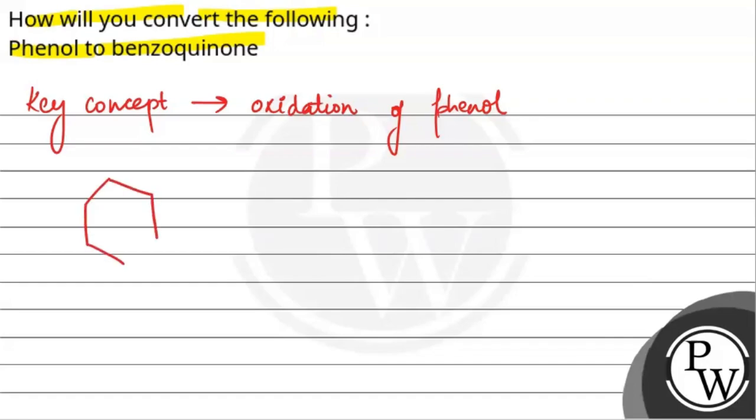This is the structure of phenol. We will react it with Na2Cr2O7 and H2SO4.